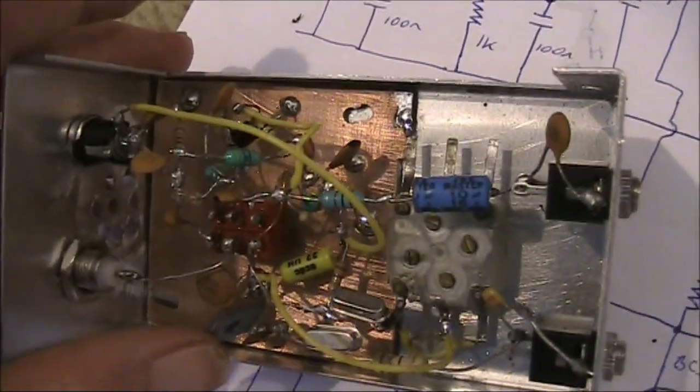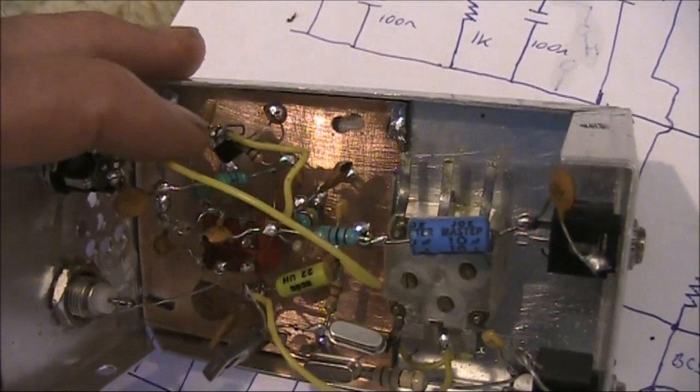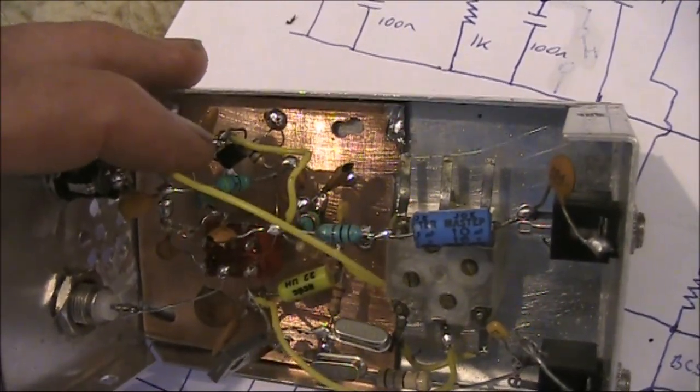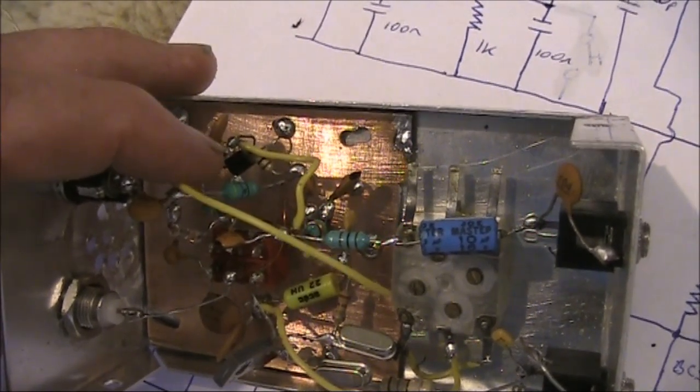Inside, this is the BD139 transmitter. And the black transistor there is the BC548 for the receiver.